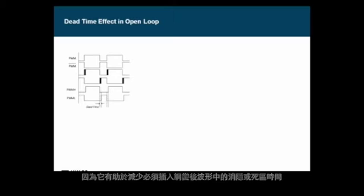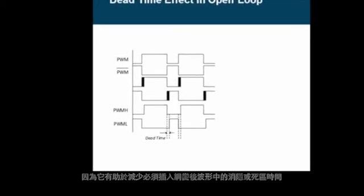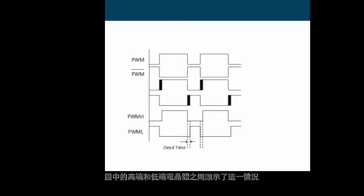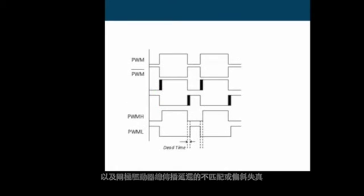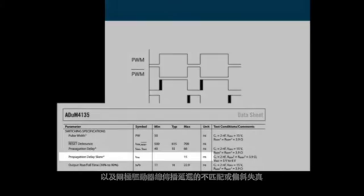The propagation delay skew or jitter is also important in that it helps to minimize the blanking or dead time that must be inserted in the pulse width modulation waveforms, as illustrated between the high side and low side transistors. The length of the dead time is mainly determined by two factors: the mismatch between the turn-on and turn-off delay times of the IGBTs themselves, and the total gate driver propagation delay mismatch or skew.